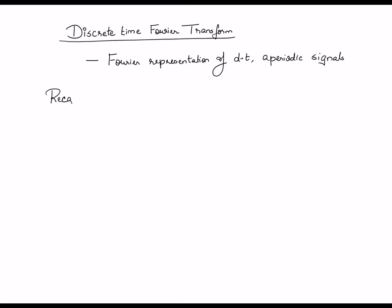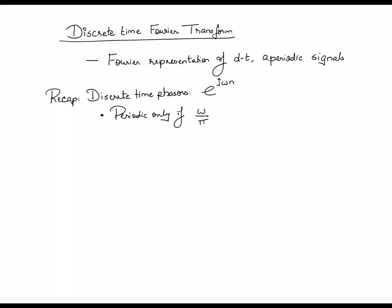This is a quick recap about discrete time phasors. Discrete time phasors have the form e raised to j·ω·n. The first thing to recall is that these phasors are not necessarily periodic, unlike continuous time phasors which are necessarily periodic. These phasors are periodic only if ω is some rational multiple of π.